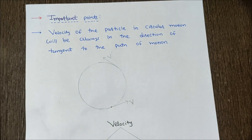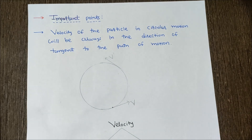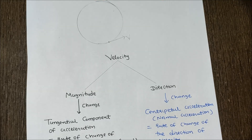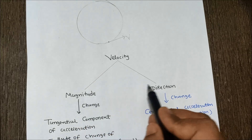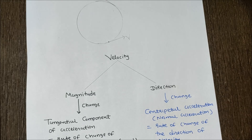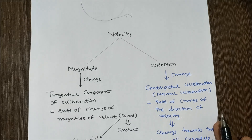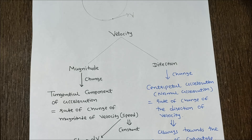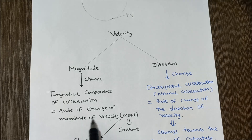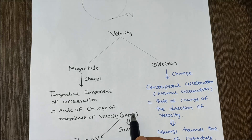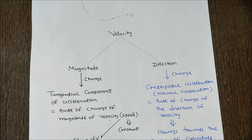Second: velocity is a vector quantity, meaning it has both magnitude and direction. If the magnitude changes, there is a tangential component of acceleration — which is the measure of the rate of change of magnitude of velocity, that is speed. If the speed of the particle is constant, then tangential acceleration is zero.